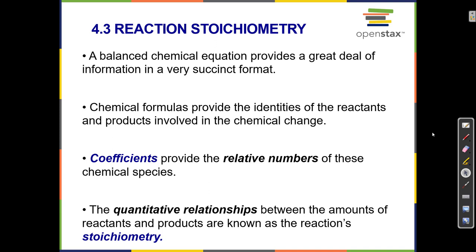Stoichiometry is the relationship of the ingredients to each other, the ingredients to the products, and the products to each other. Basically it's the ratio of all of those coefficients in a balanced chemical equation.